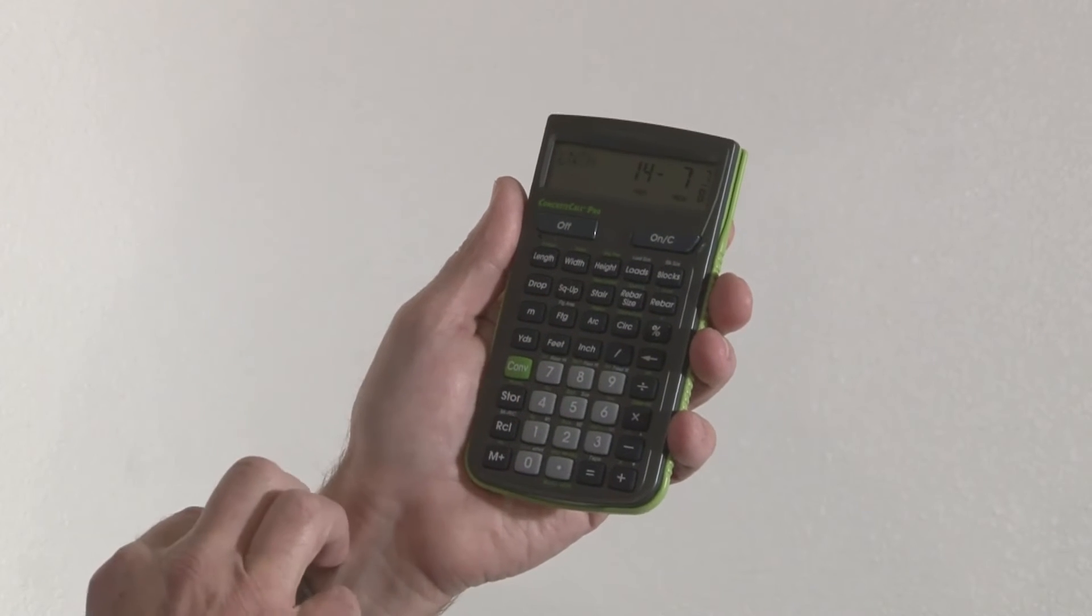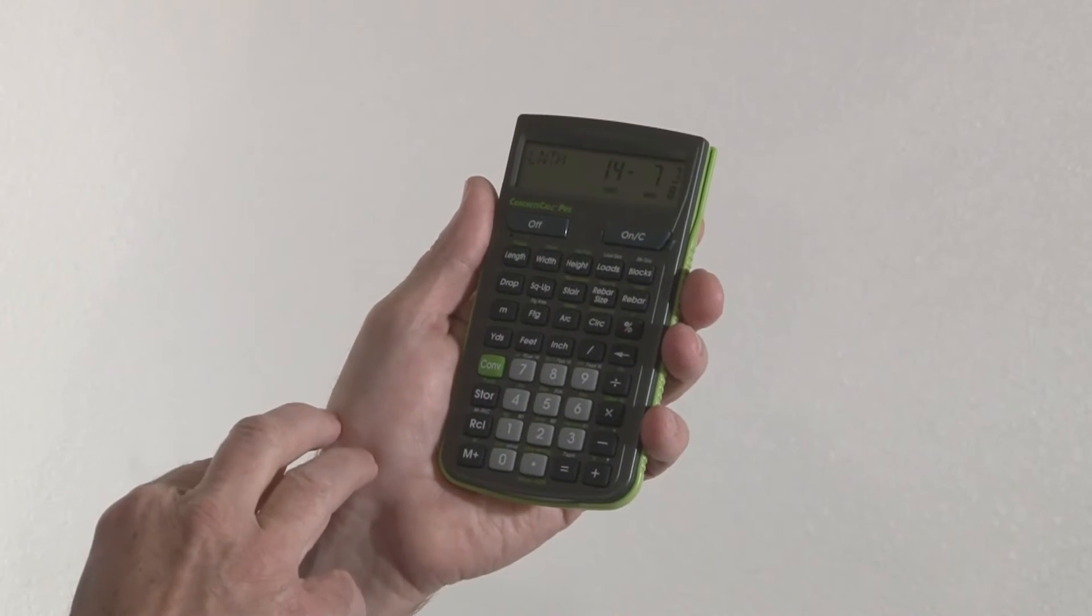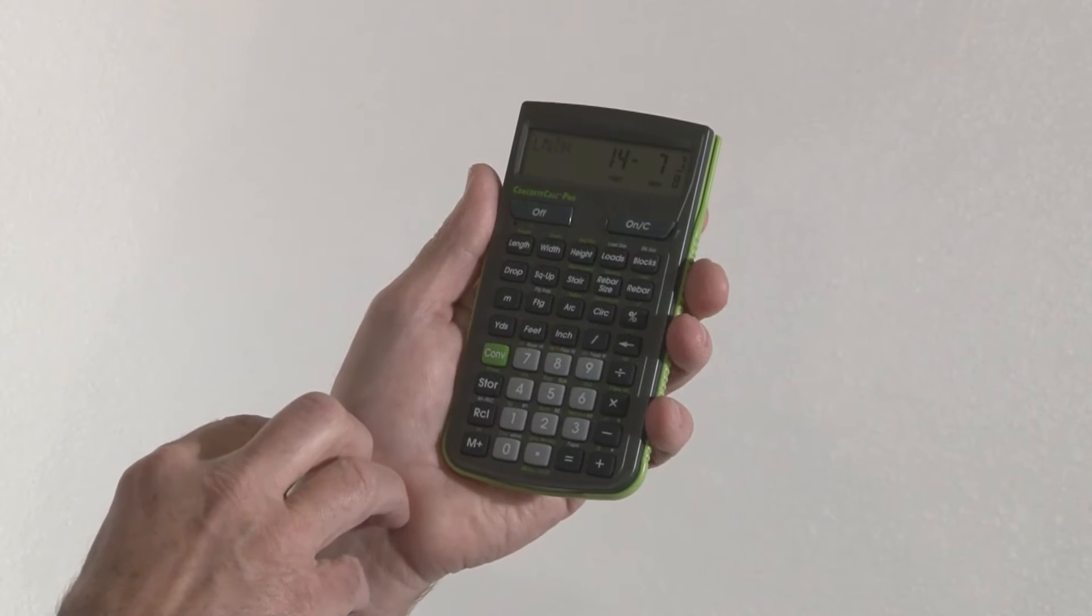The drop key here will give you the amount of fall or drop for drainage. The square up key gives you the square up diagonal for making sure your forms are set true.